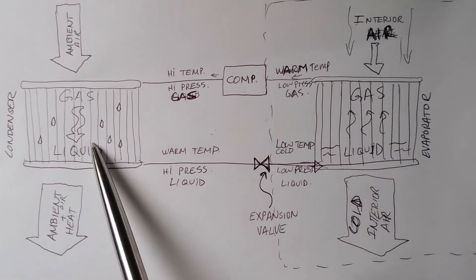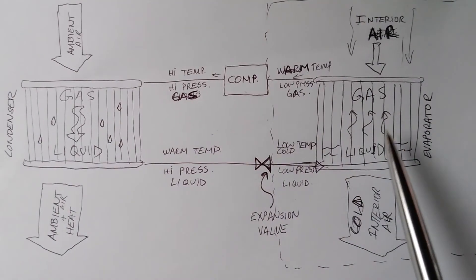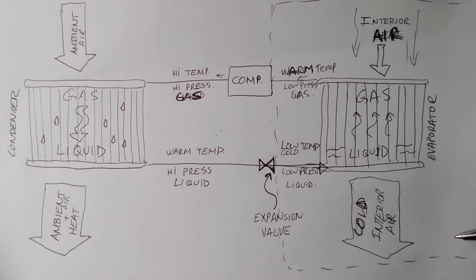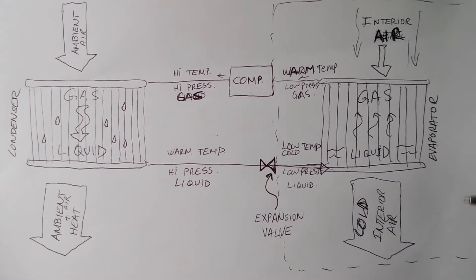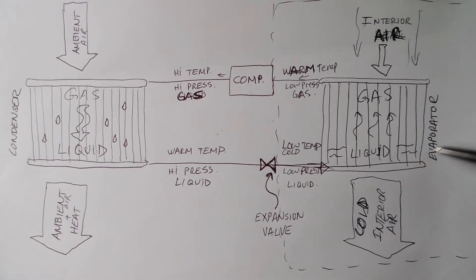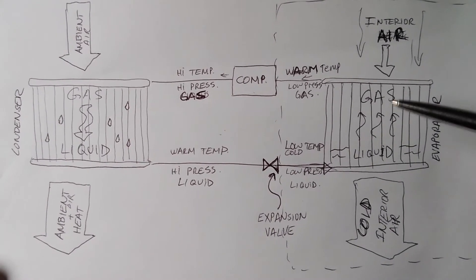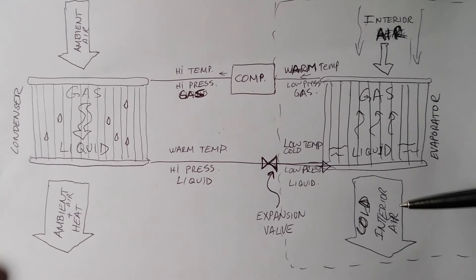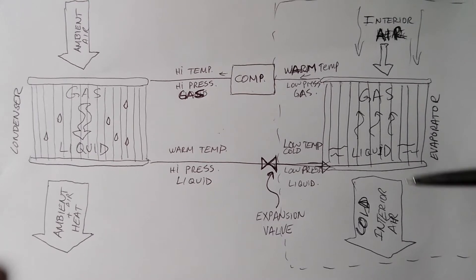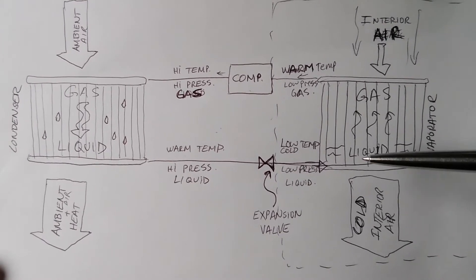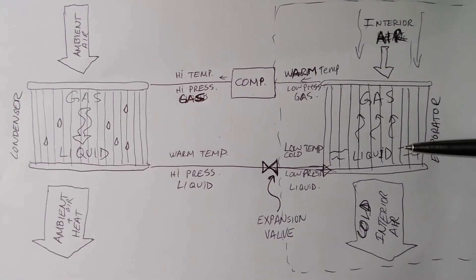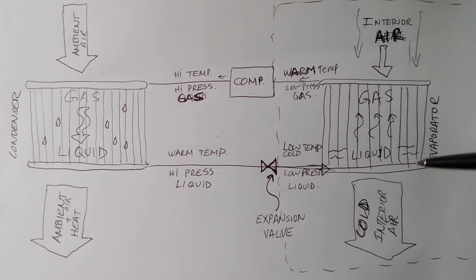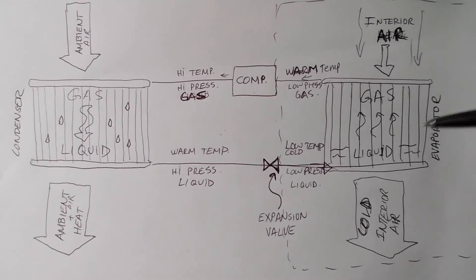A good real-world example of this phase-change principle is melting ice. Take a pot of water and dump in a bunch of ice — the temperature of the liquid water will come down to the freezing point. At that point the ice starts to melt, and as long as there's ice to melt, the temperature of the water will not go any lower than freezing — 0°C or 32°F.